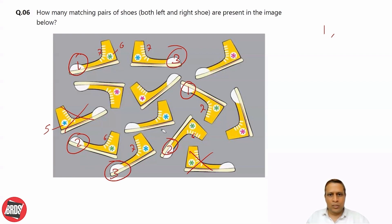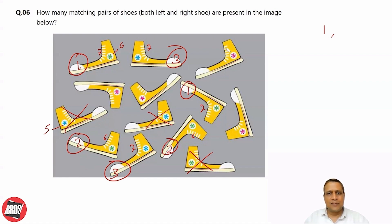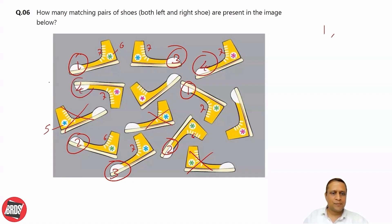How many blues are left? Only one blue is left and this is already eliminated. Now if you consider this one, we have one, two, three, four, five, six, seven lines here. Counting here: one, two, three, four, five, six, seven - this and this match. So this is the fourth pair.